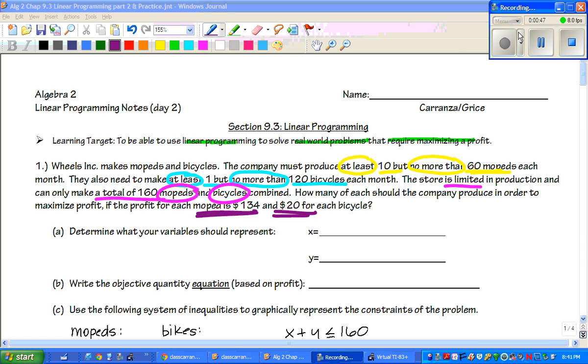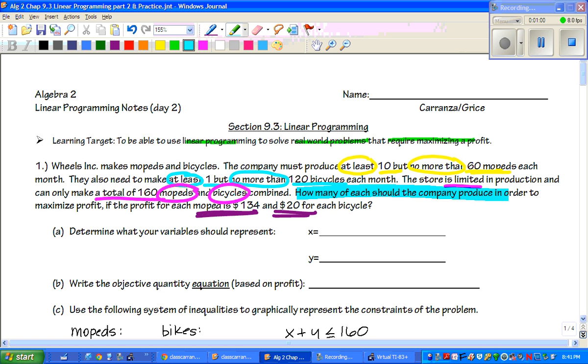Okay, so there's a lot of information in this. The first thing that we always need to do is know what the variables are, and that's related to our question. The question is asking us how many of each should the company produce in order to maximize the profit. Each what? Moped and bicycle. So you need to label one as your X and one as your Y. So my X is going to be the mopeds just because that's first, and then my Y is bicycles.